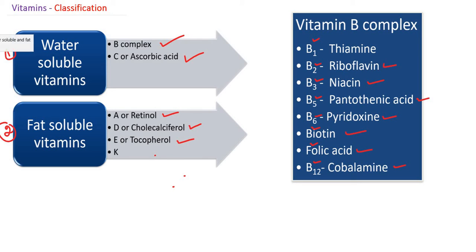Now we will see the quick differences between these vitamins. Water-soluble vitamins are soluble in water and fat-soluble vitamins are not. Since water-soluble vitamins dissolve in water, their absorption is very simple. Whereas fat-soluble vitamins require lipids for absorption — the lipids present in our diet help in the absorption of fat-soluble vitamins A, D, E, and K.